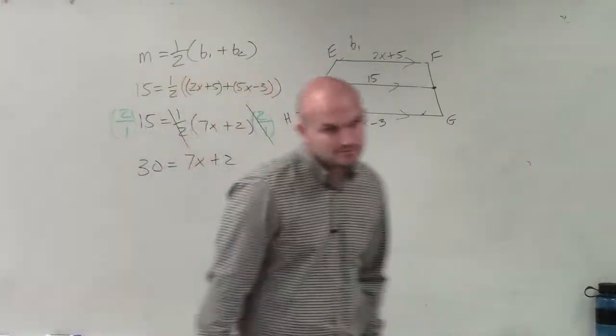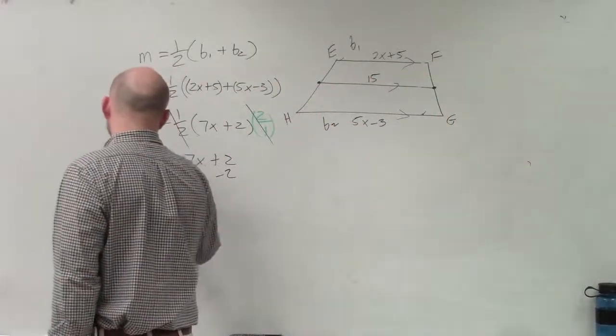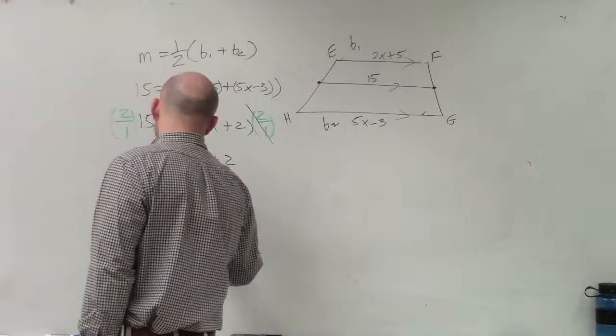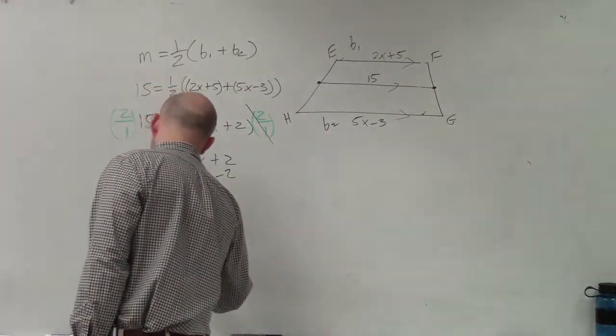So now I have 7x plus 2. All right, subtract 2, 28 equals 7x. Divide by 7. Divide by 7. x equals 4.